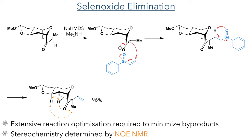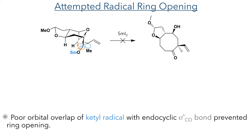NOE-NMR looks at NMR coupling through space rather than the more common J-coupling which occurs through bonds. This allows the researchers to see which groups are in close proximity within the molecule.